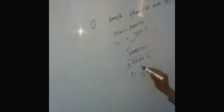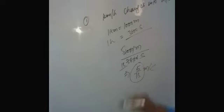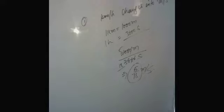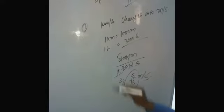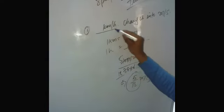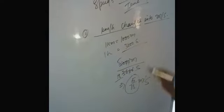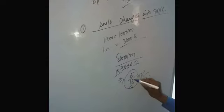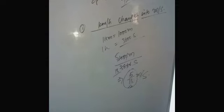The conversion factor is 5 by 18 meters per second. If kilometers per hour changes into meters per second, we have to multiply by 5 by 18.